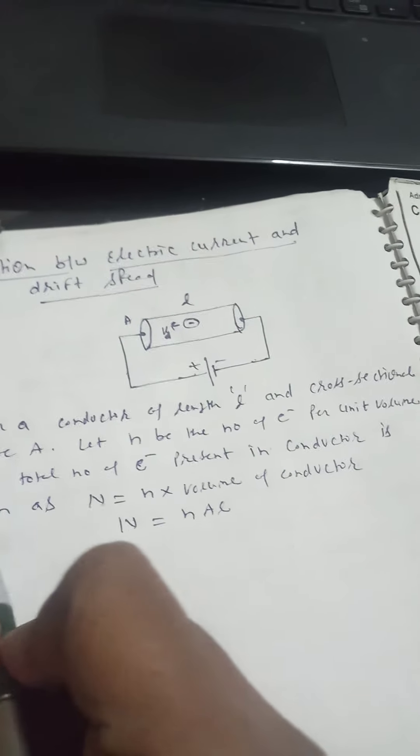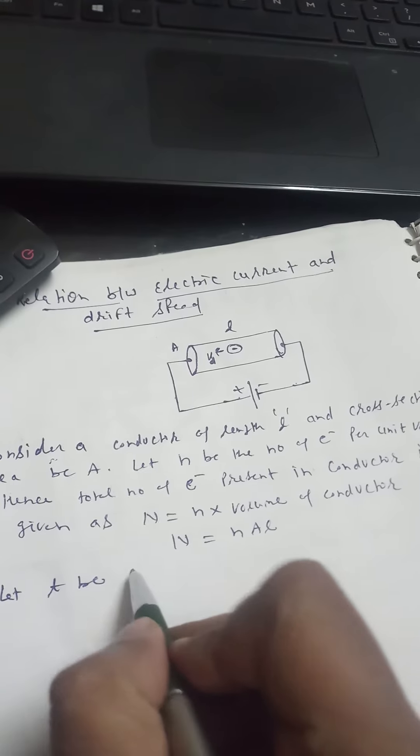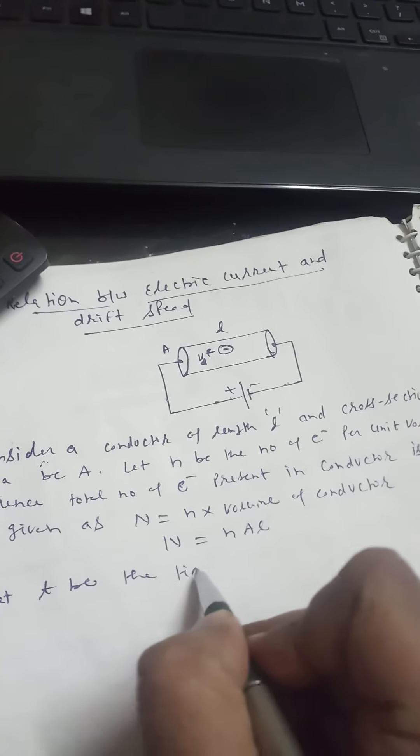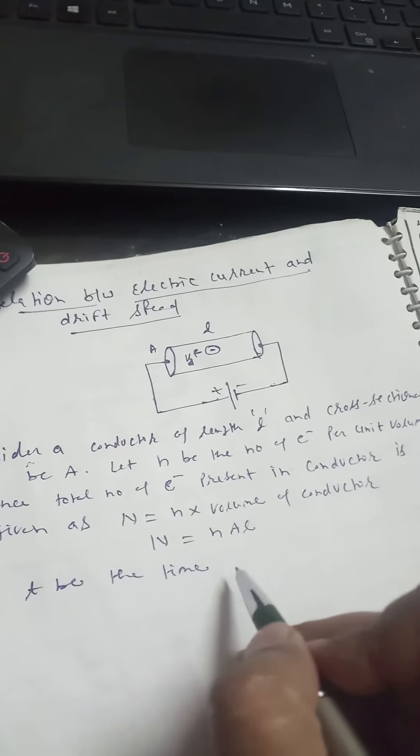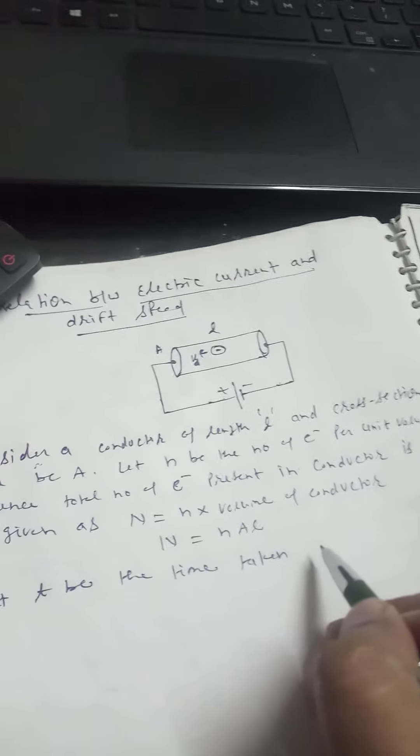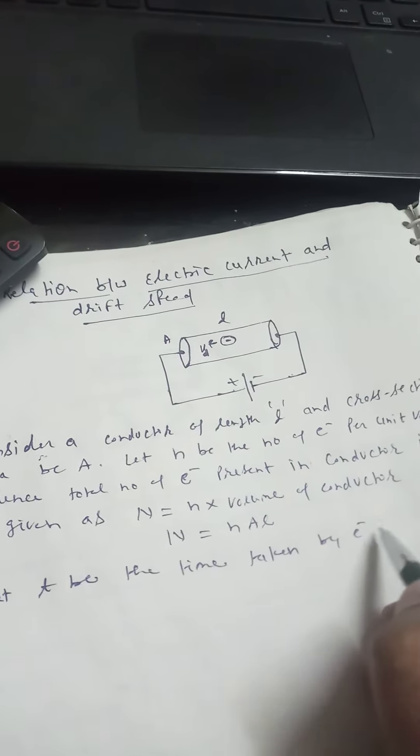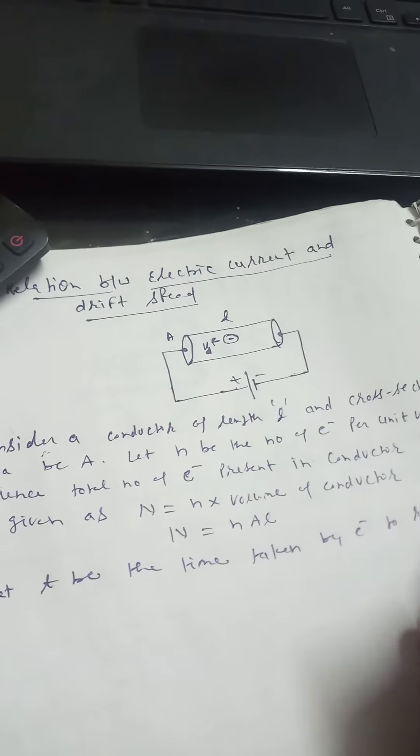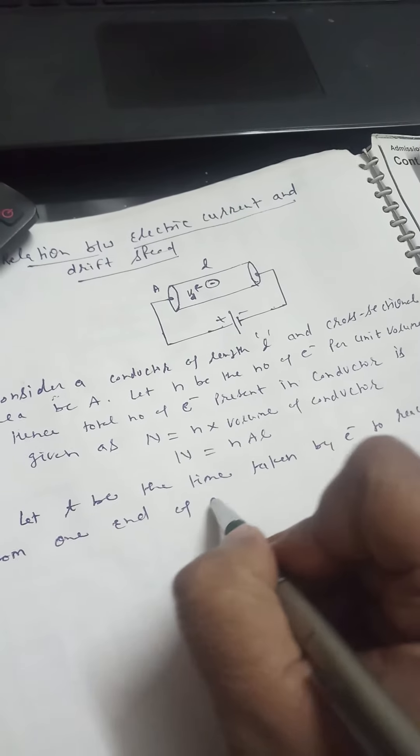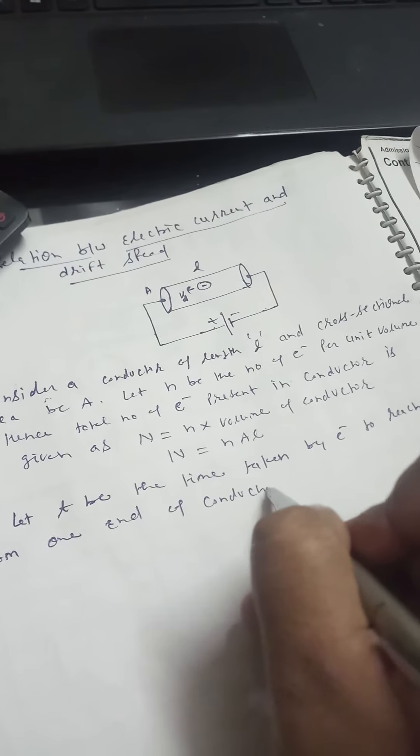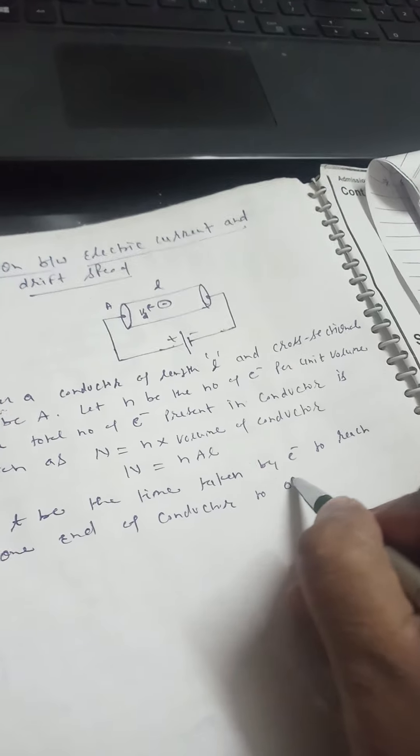Unit volume ke andar small n electrons. Small t be the time taken by electron to reach from one end of conductor to other.